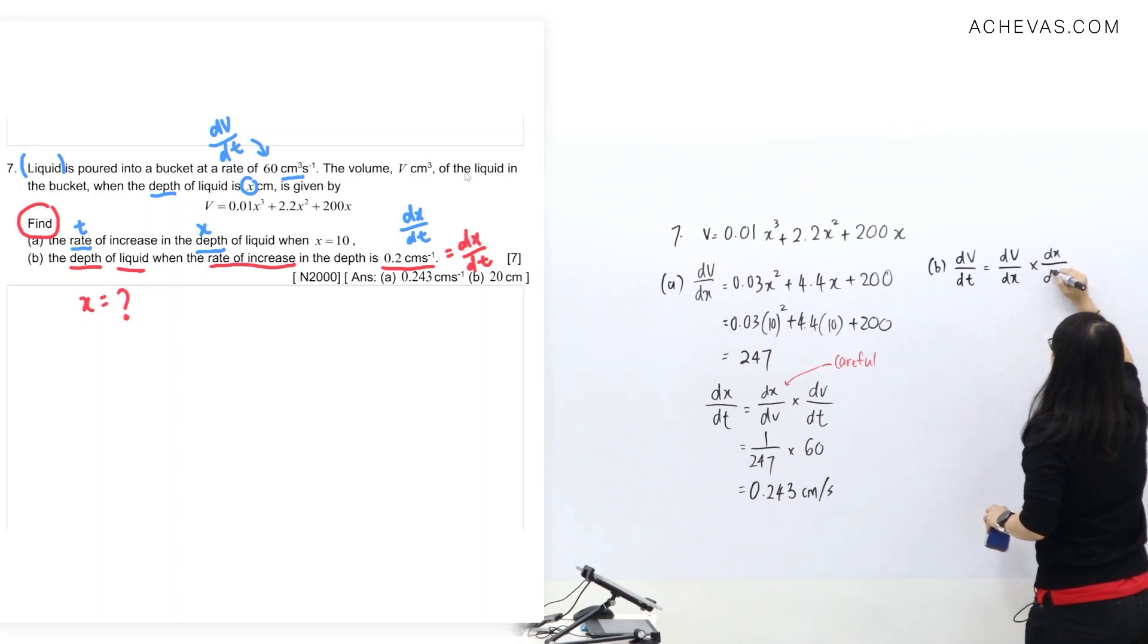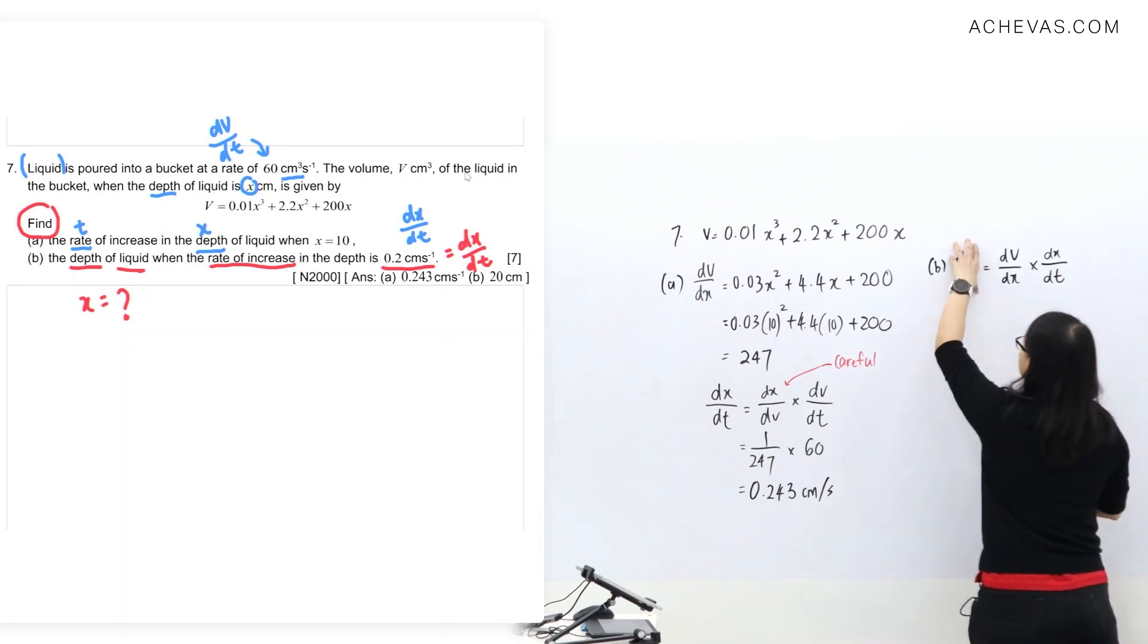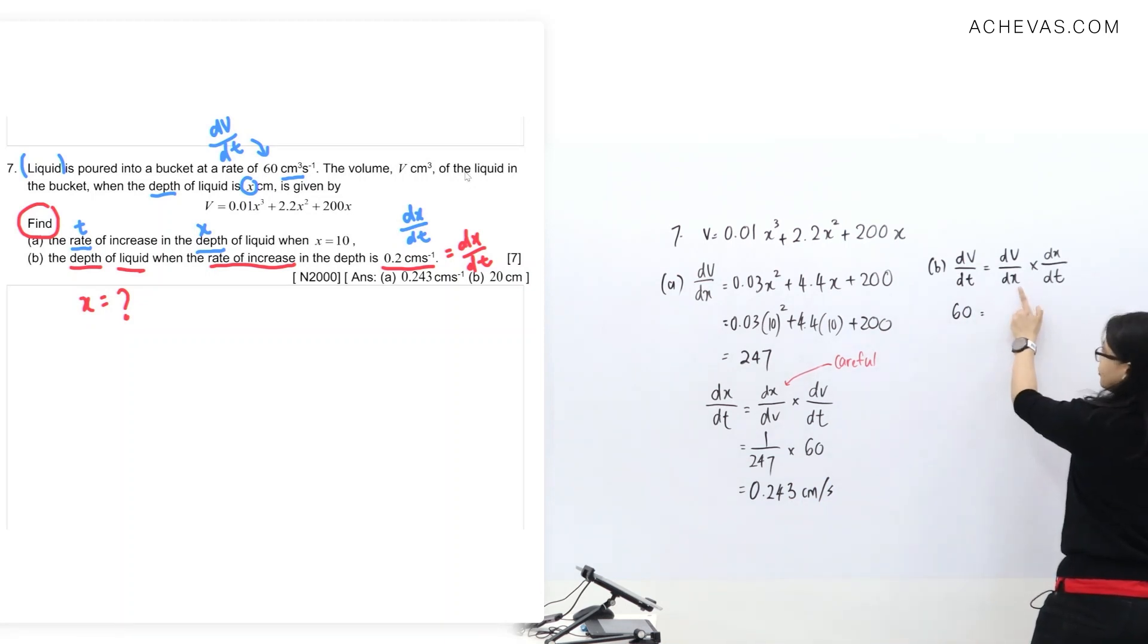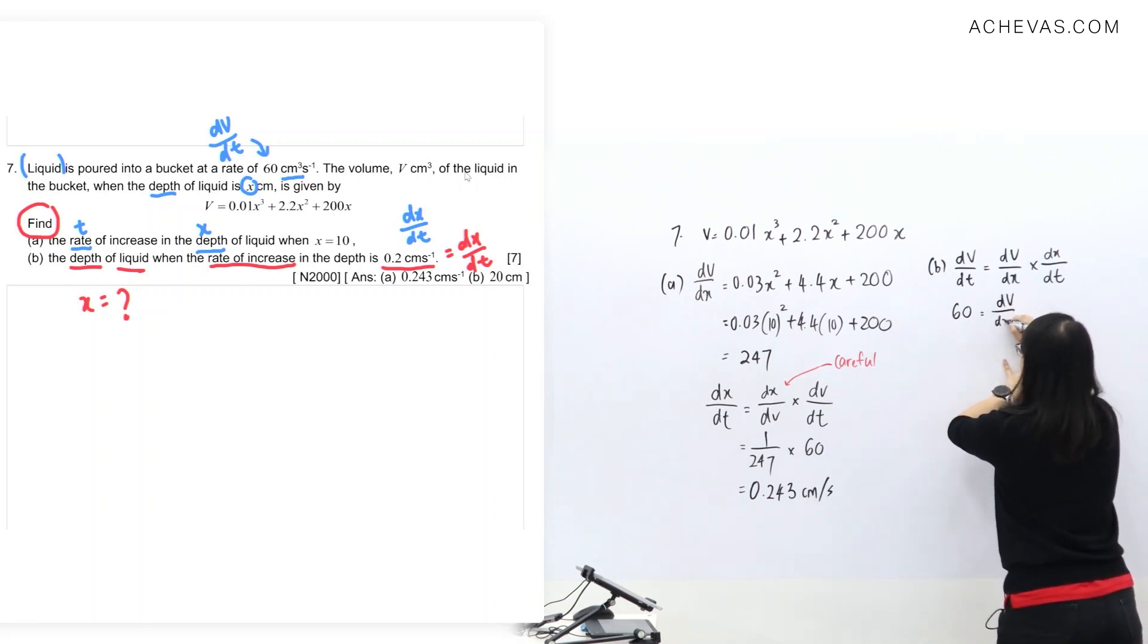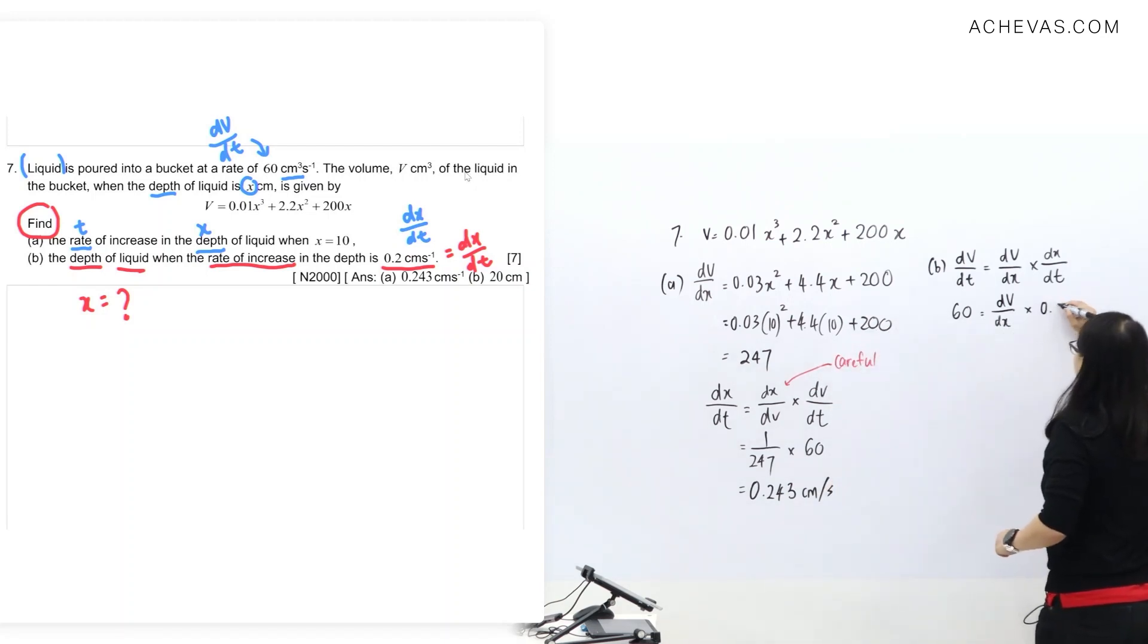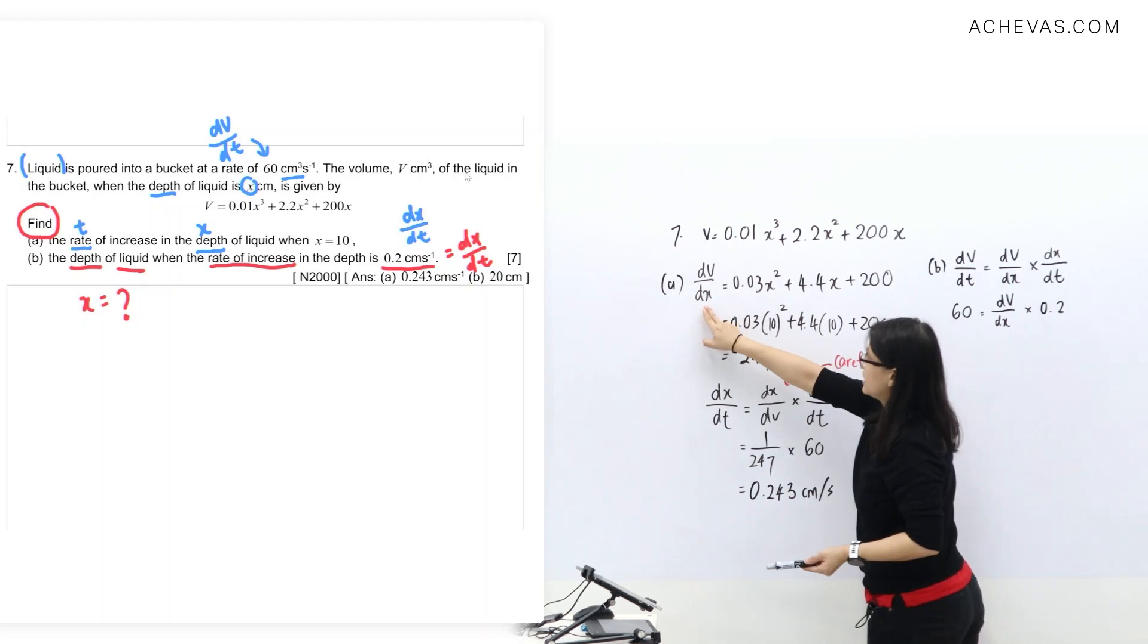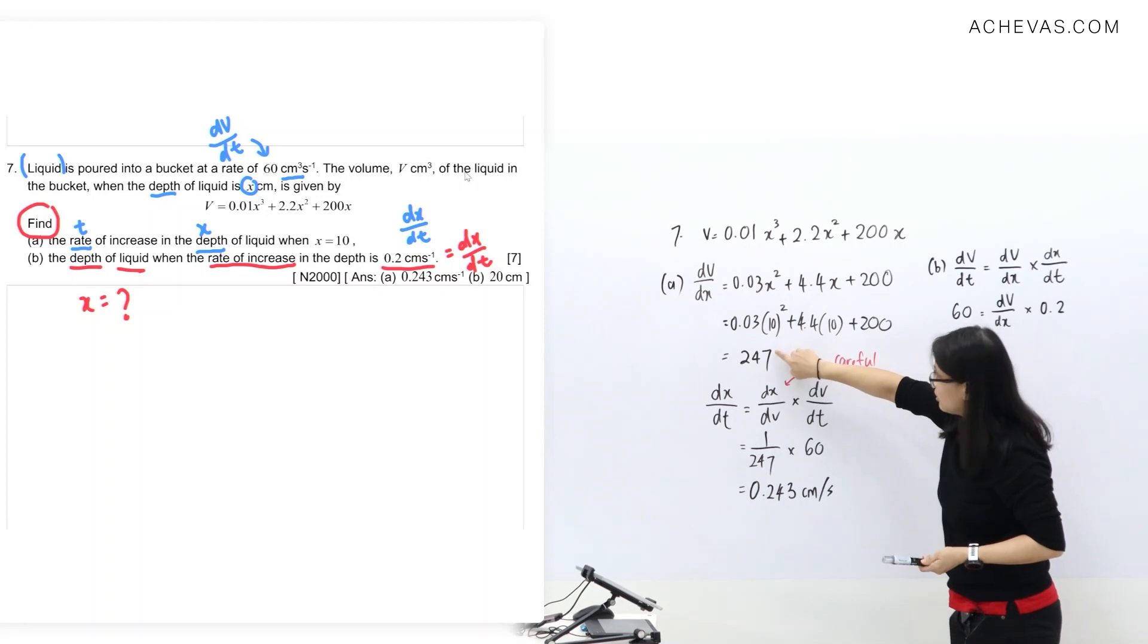This dV/dx is given from the first part of question, which is 60. I said before the dV/dx - you want to sub here, fine, but I'm going to leave it first so that it can equate later. dx/dt value for part B is given at 0.2, so I'm going to do 0.2. Now you notice that I cannot use this dV/dx value of 247. This 247 is because I know the value of x is 10.